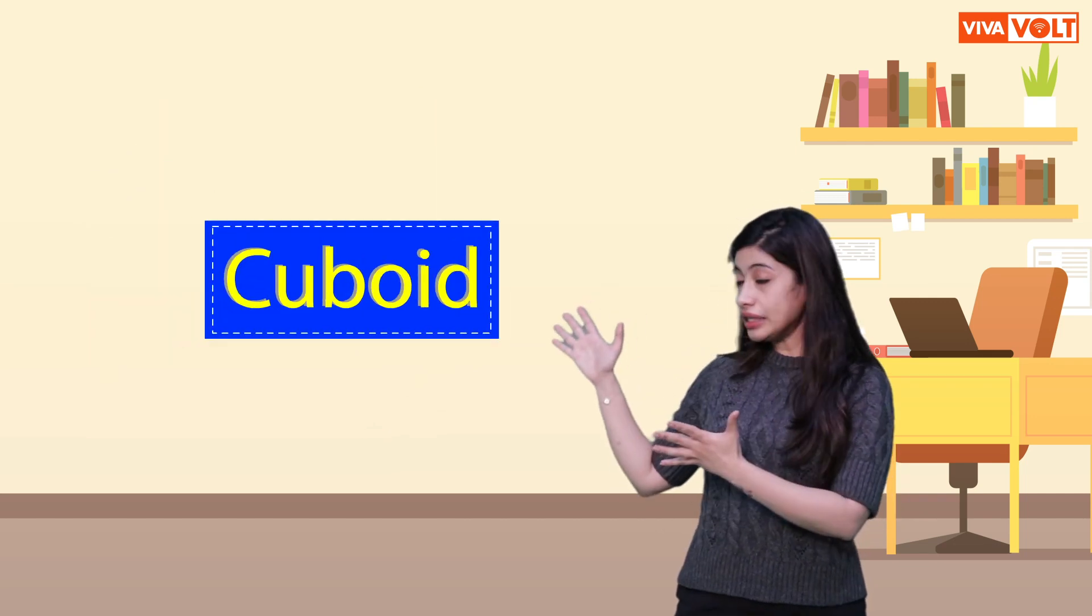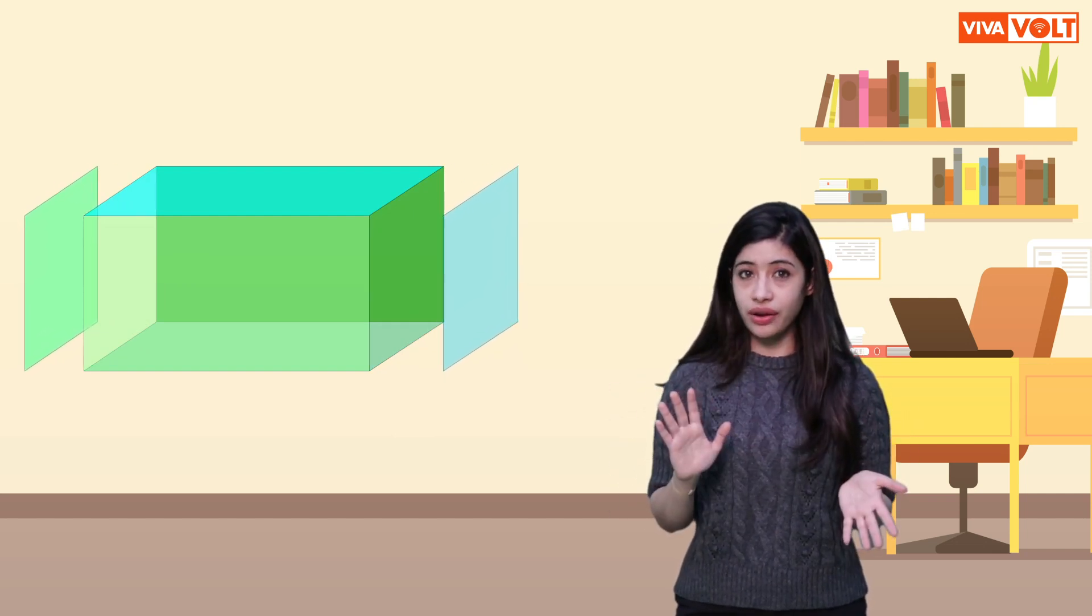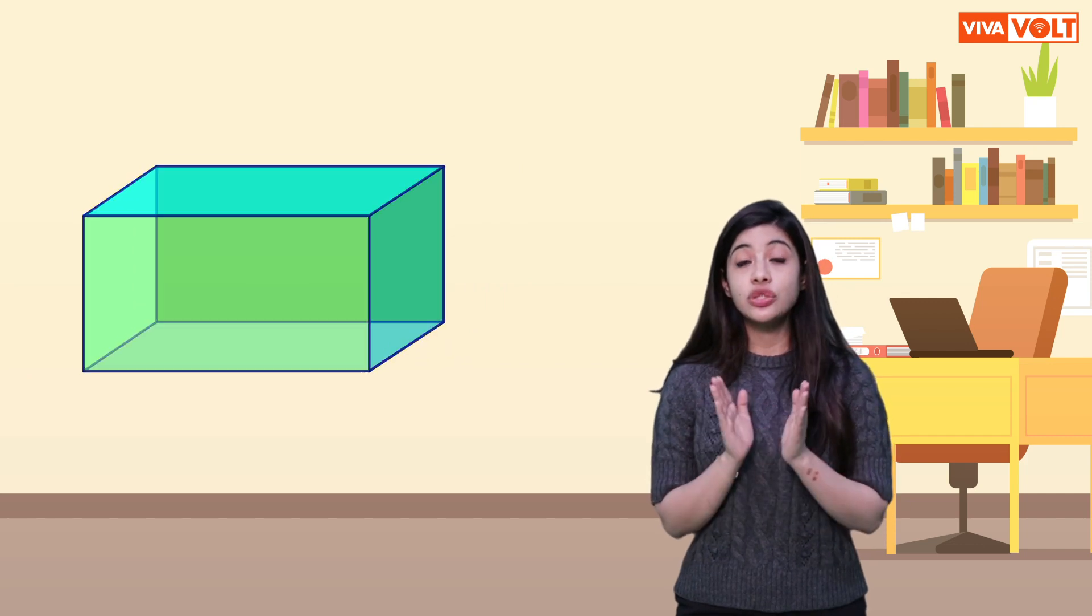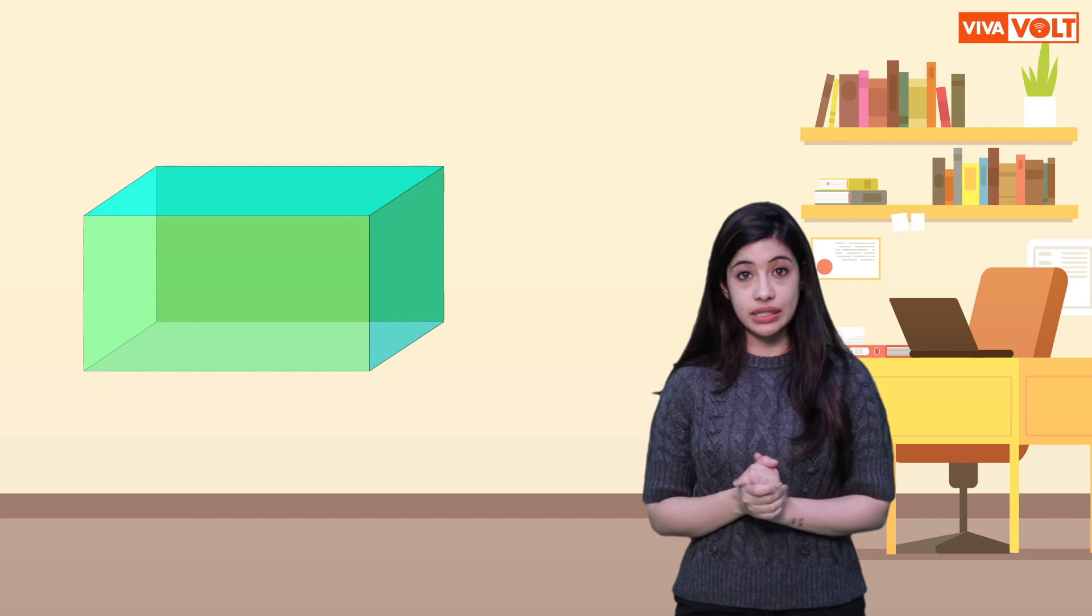Cuboid. A cuboid has six flat spaces. Four of them are always rectangular. The other two may be rectangular or square. It has 12 edges, eight corners or vertices.